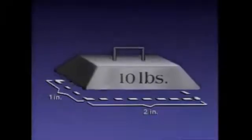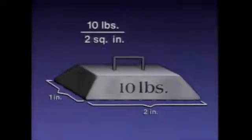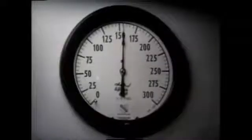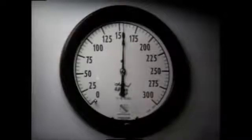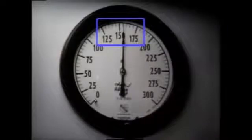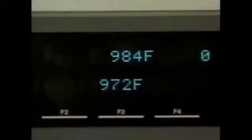Ten pounds of pressure divided by two square inches is five pounds per square inch. In a plant, pressure is often indicated on a gauge like this one. This gauge is indicating about 156 PSI — in other words, the pressure at this point in the system is about 156 pounds per square inch.